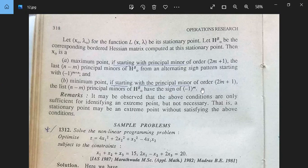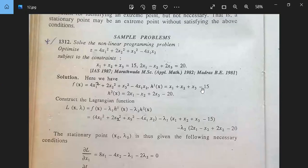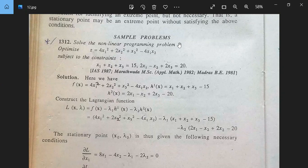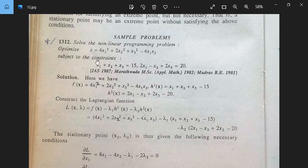So let us see one example based on this concept. Solve the non-linear programming problem: Optimize z equal to 4x_1 squared plus 2x_2 squared plus x_3 squared minus 4x_1 x_2. This is a non-linear function, subject to the constraints x_1 plus x_2 plus x_3 equal to 15, and 2x_1 minus x_2 plus 2x_3 equal to 20.